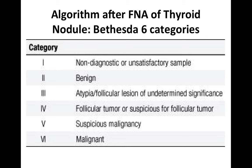The FNA is sent for cytology, and the cytologist assigns one of six Bethesda categories. Category 1 is non-diagnostic or unsatisfactory. Category 2 is benign thyroid cells. Category 3 is atypia of undetermined significance (AUS) or follicular lesion of undetermined significance (FLUS). Category 4 is follicular tumour or suspicious for follicular tumour. Category 5 is suspicious for malignancy. Category 6 is definitely malignant.